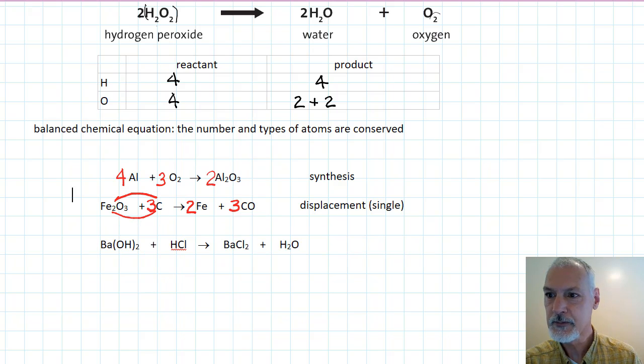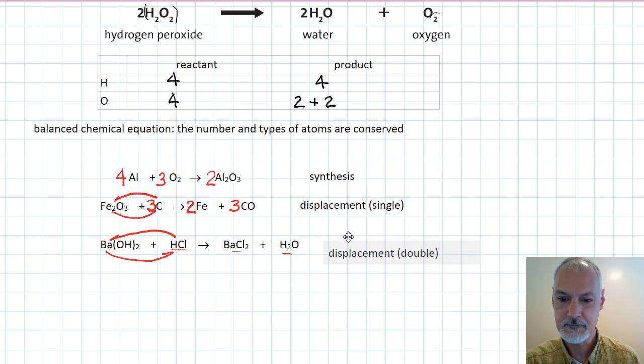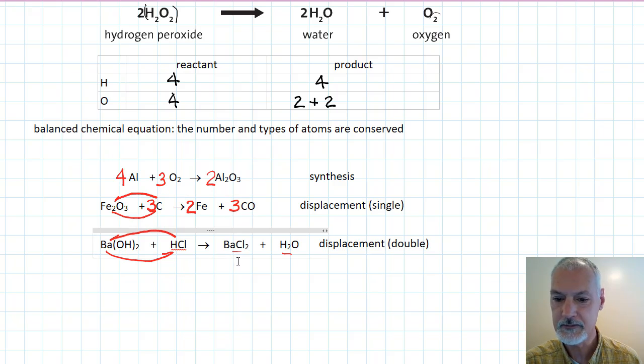In this reaction, again, we have a switching of partners taking place. The hydrogen is taking the place of the barium to produce the water, and the barium taking the place of the hydrogen to form the barium chloride. This pattern of reaction is called a displacement as well, but we call it a double displacement reaction, as both substances have switched positions and paired up differently.